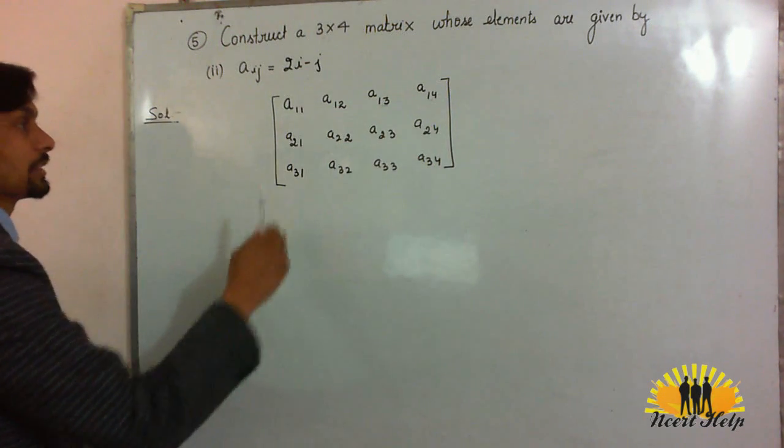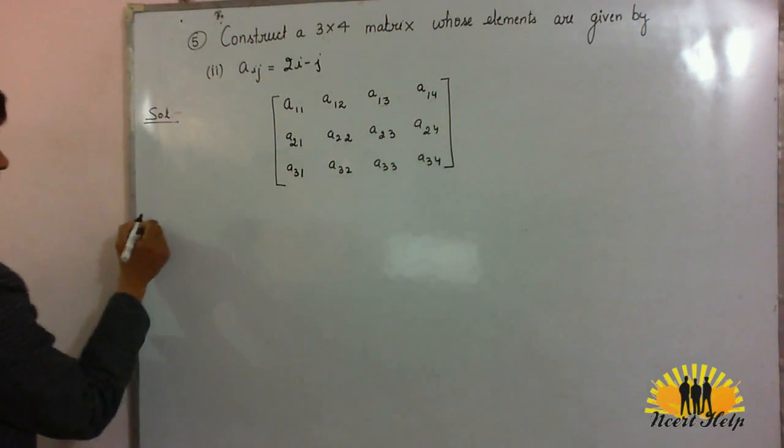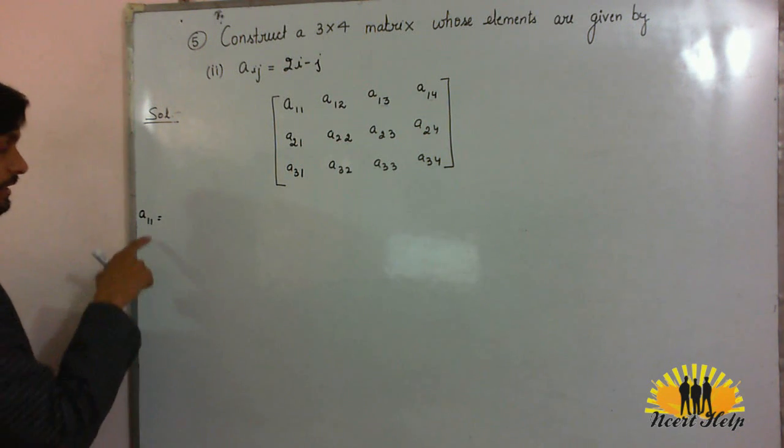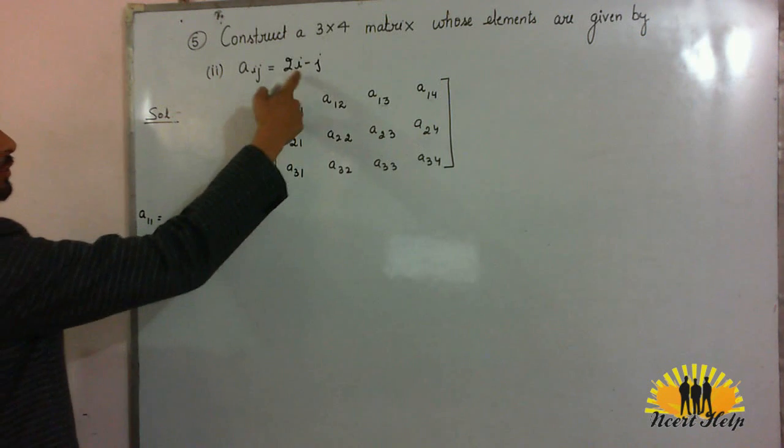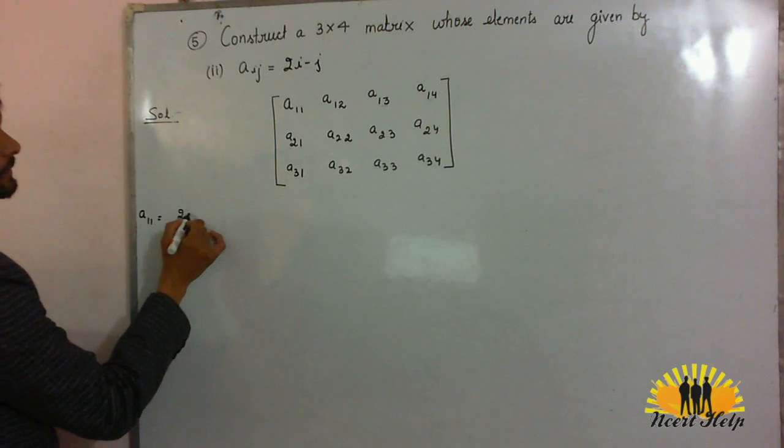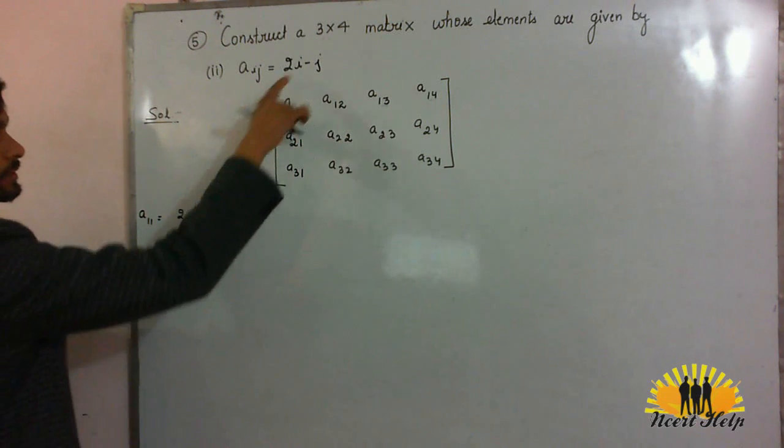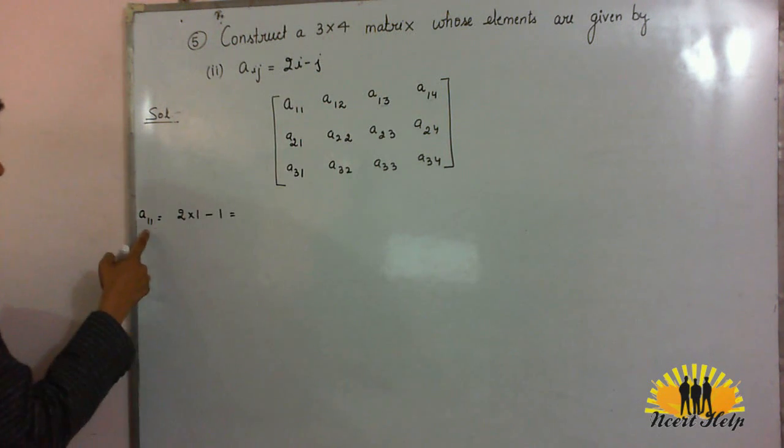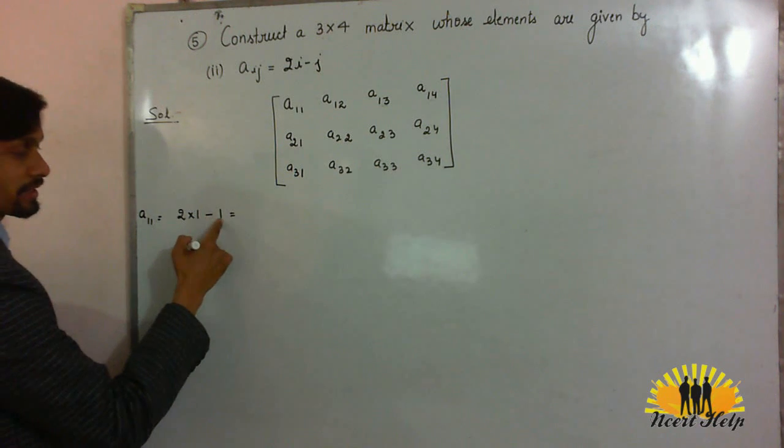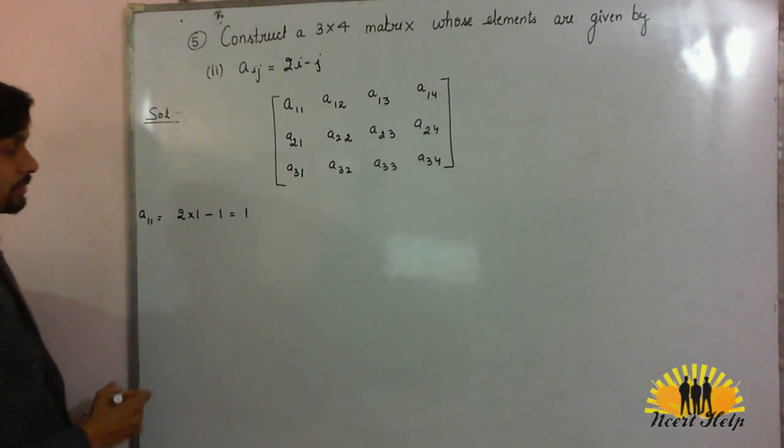Now we will calculate the values of these elements. A11, the first value of the matrix, here i is 1, j is 1, put in this formula: 2 into 1 minus 1. i is 1, j is 1, put in the formula and we will get 2 minus 1 that is 1.